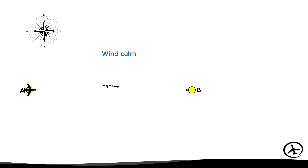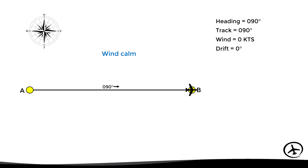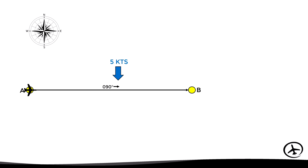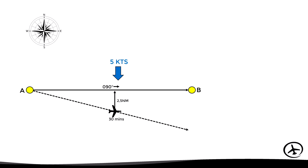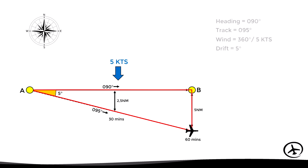The same principle applies to an aircraft in flight. Let's say an aircraft wants to fly from point A to point B with a desired course of 090 degrees. If there is no wind, there will be no drift, so the track will be 090 as well. However, if there is a 5-knot crosswind flowing from left to right, it will push the aircraft off course — 2.5 miles after 30 minutes and 5 miles after 60 minutes. We can again use this triangle to determine the drift angle of 5 degrees, giving an actual track of 095.